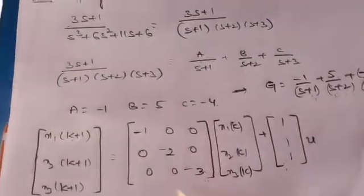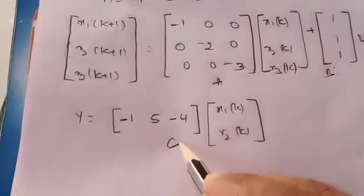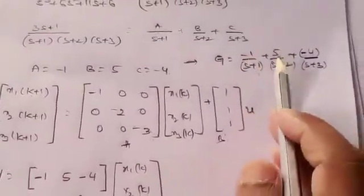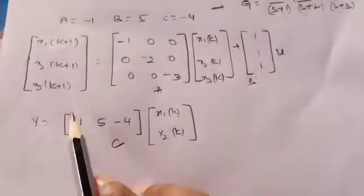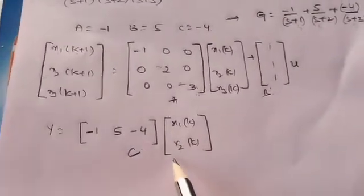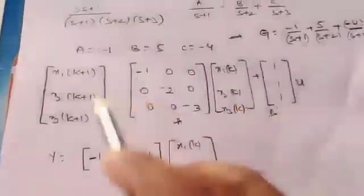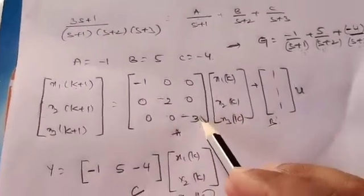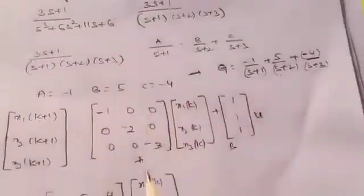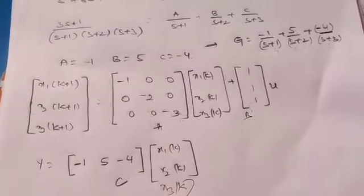The C matrix is represented with the numerator values: [−1, 5, −4] multiplied by [x1, x2, x3(k)]. This is how to form the diagonal canonical form for a given transfer function when poles are not repeated. Thank you.